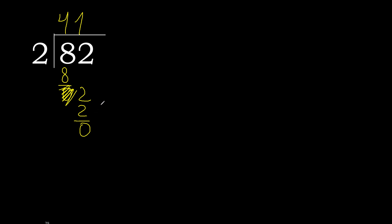There is no next number, and here that is 0, therefore we finish. 82 divided by 2 is 41.